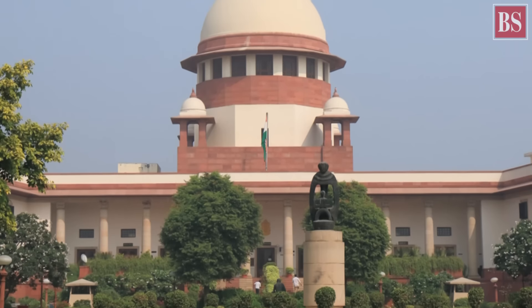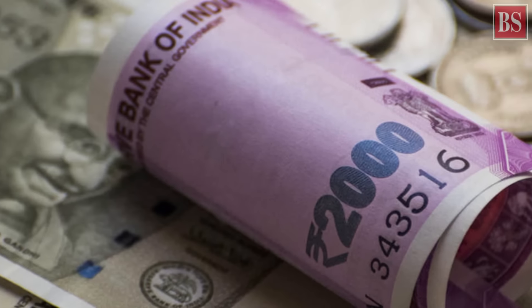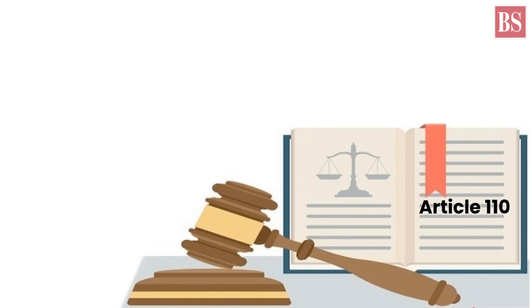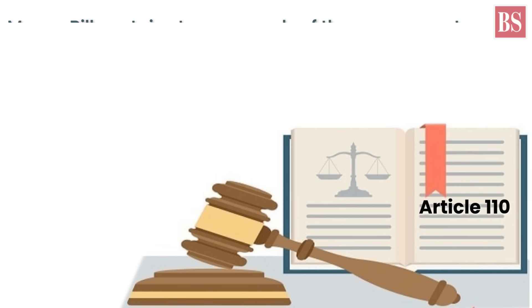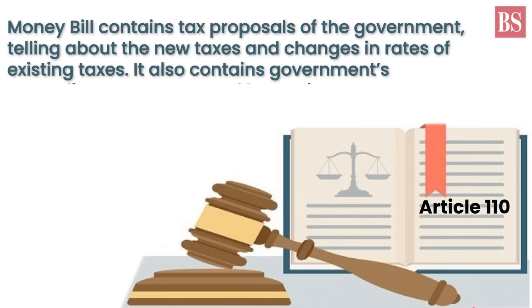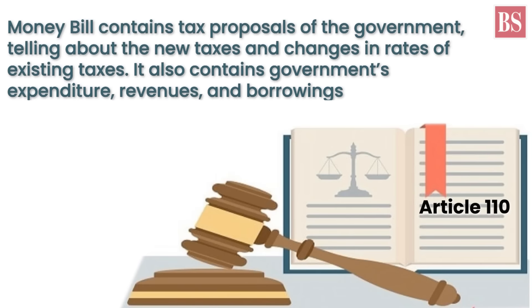The bench was led by the then Chief Justice of India, Deepak Mishra, and the sole dissenter was Justice Chandrachud. Let us now understand what a Money Bill is. Defined in Article 110 of the Constitution, a Money Bill contains tax proposals of the government, telling about the new taxes and changes in rates of existing taxes. It also contains the government's expenditures, revenues and borrowings.